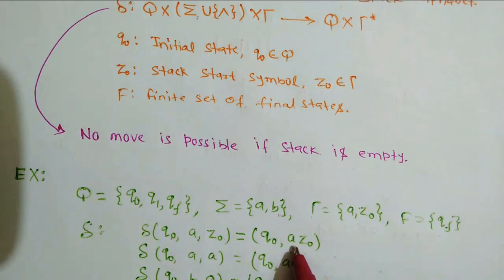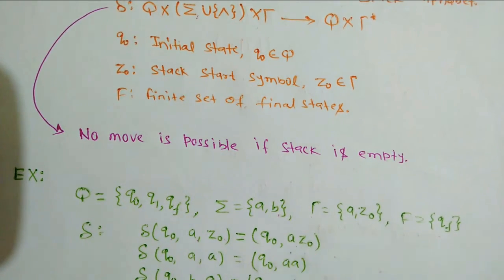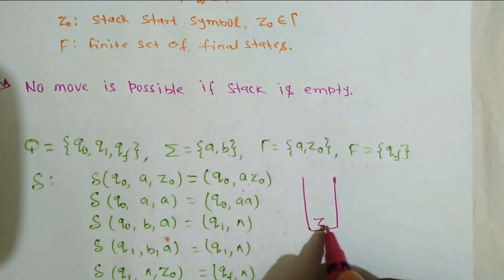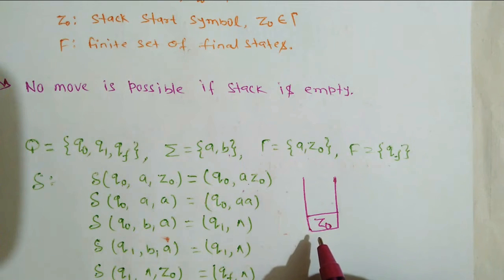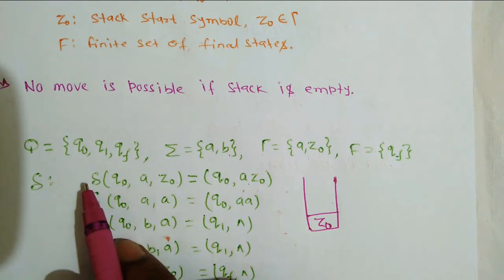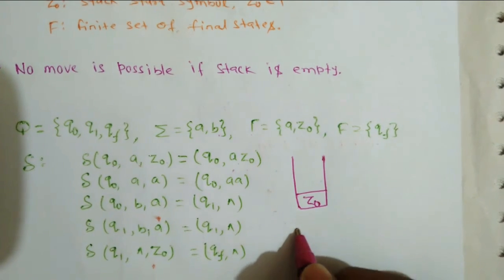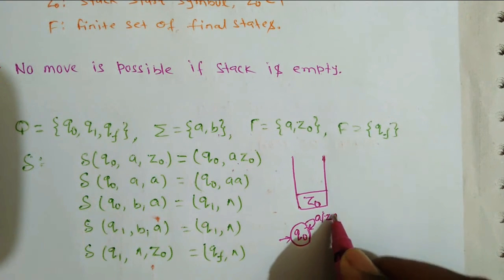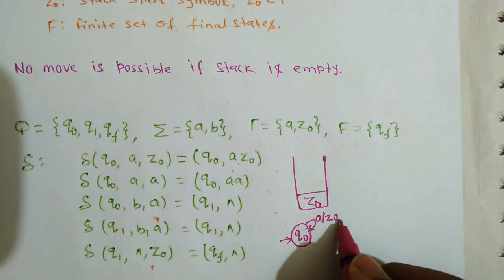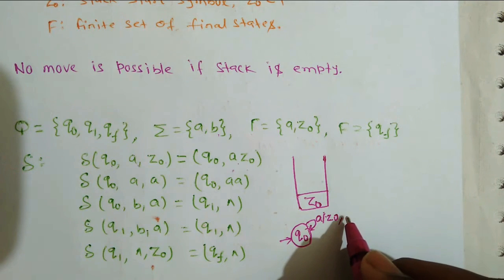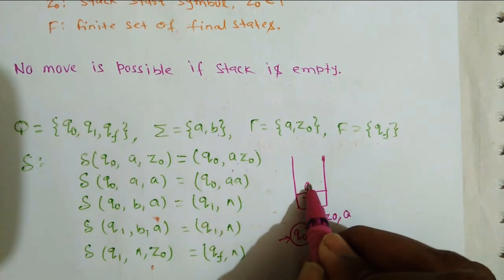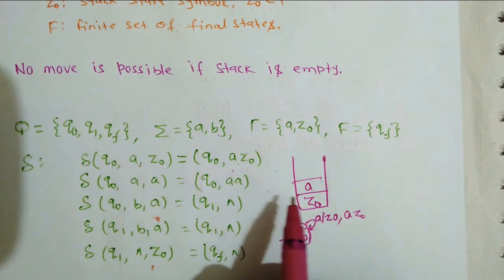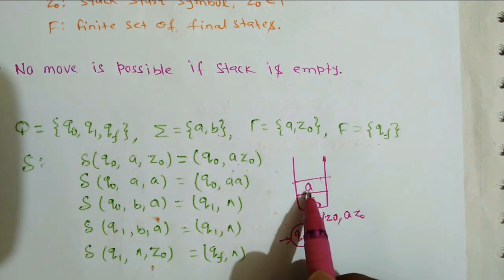Suppose initially we take a stack and the top of the stack is z-naught. This transition says: when on state q-naught and reading symbol 'a', if the top of the stack is z-naught, go to the same state q-naught. Now the top two items of the stack will be 'a' and z-naught — you are pushing items onto the stack. So 'a' is pushed and the top two elements become a and z-naught.